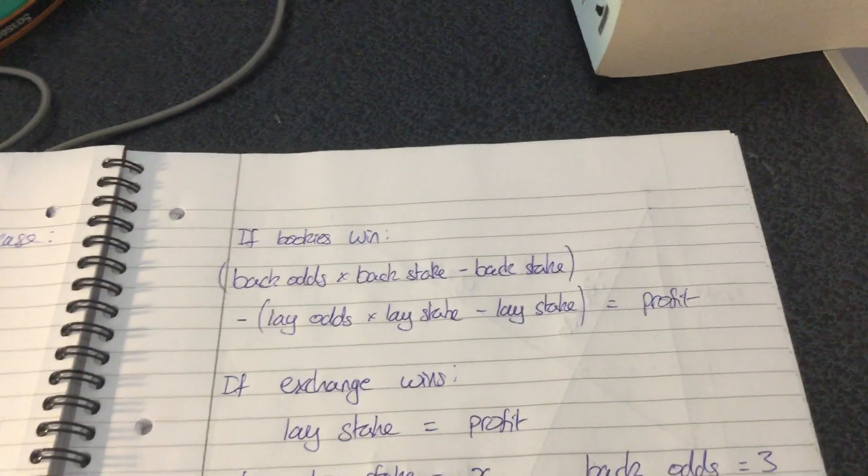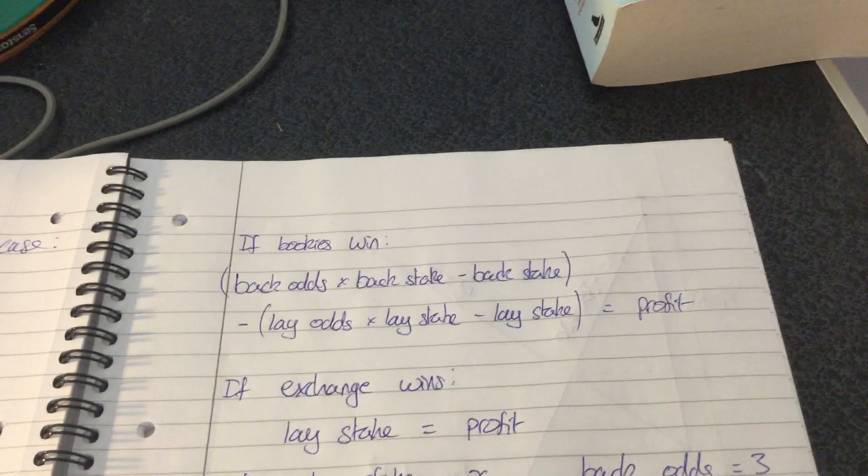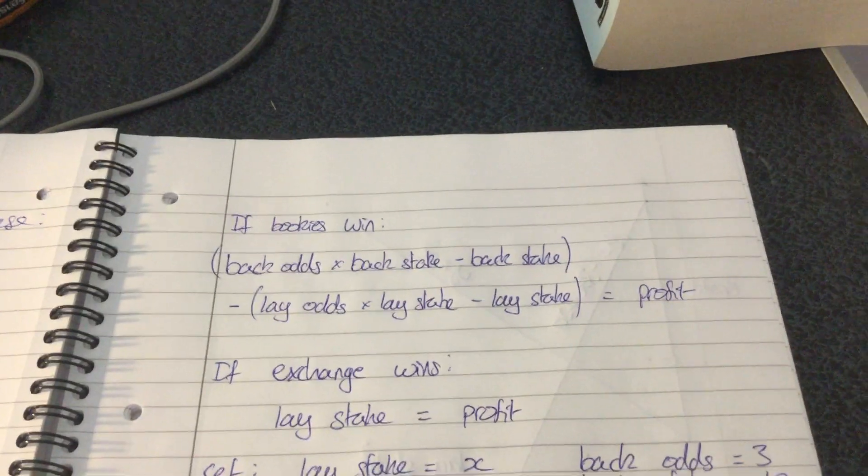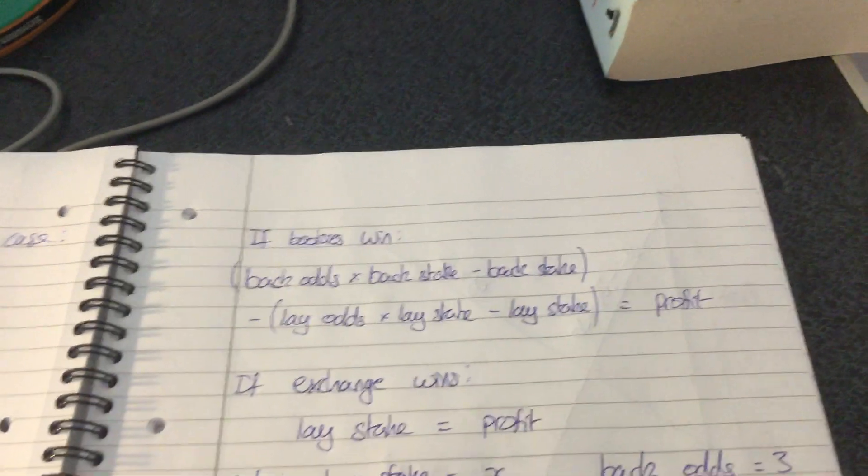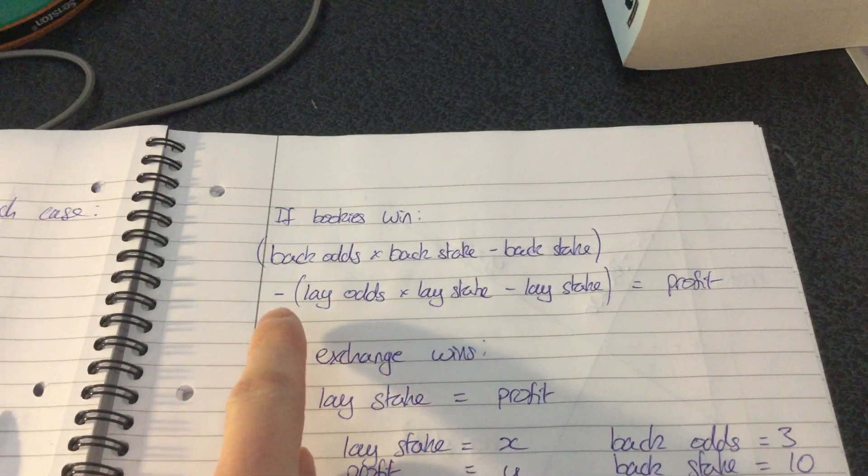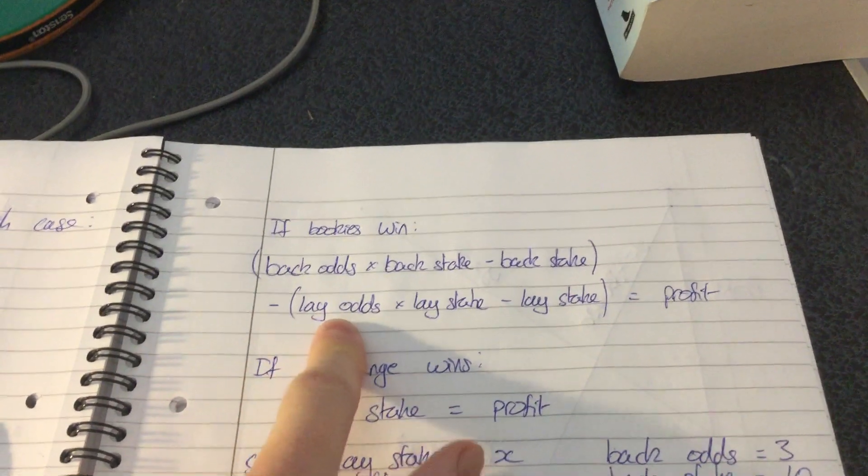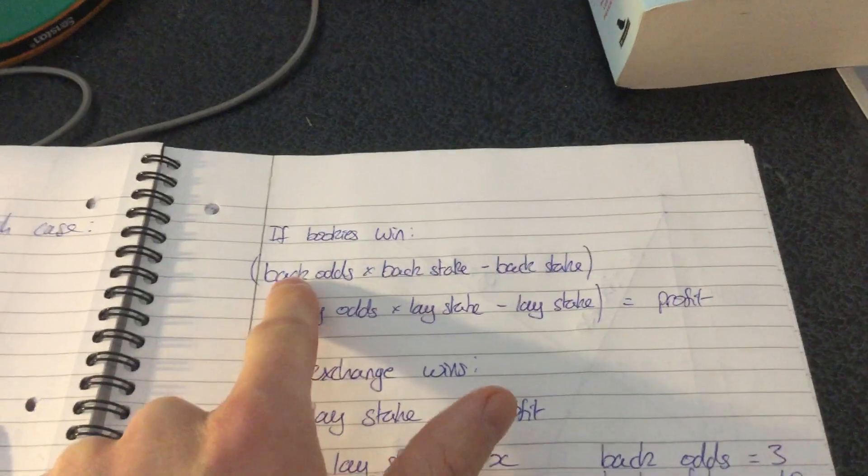If ordinarily I just placed a bet on the bookies and that was it and I didn't place a bet on the exchange, then that would be my profit from that bet. But of course because it's matched betting I've put a bet on the exchange, so I've lost this money on the exchange because the bookies have won.